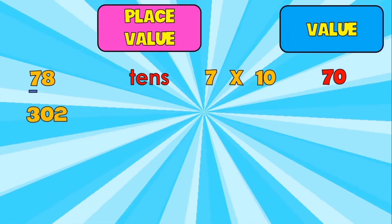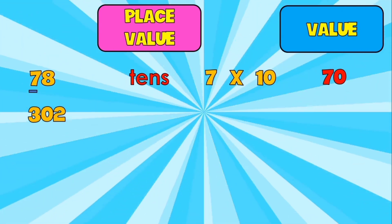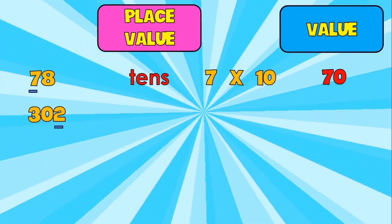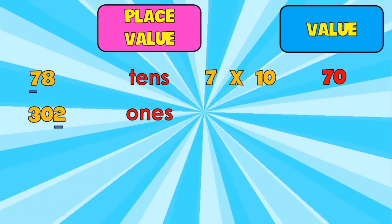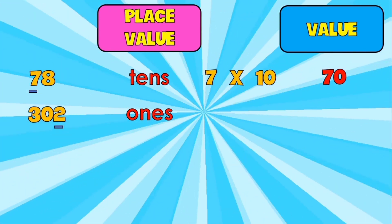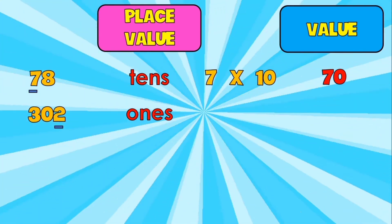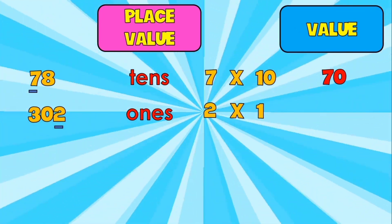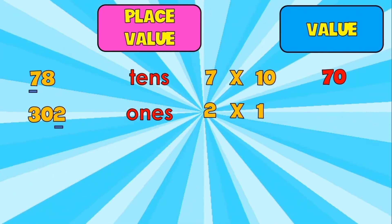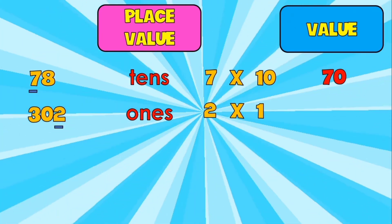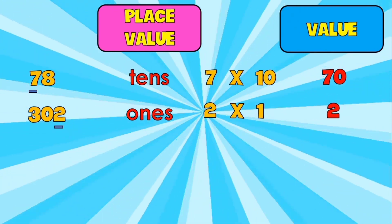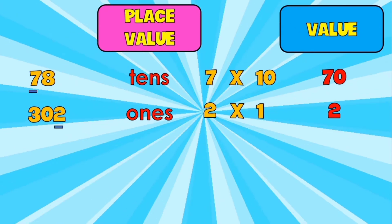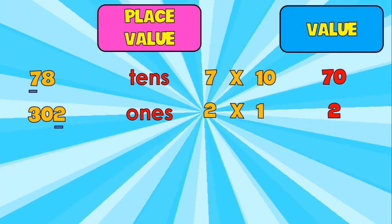Next number: 302. What is the place value of 2? It's in ones place. Let's get the digit 2 and multiply it by 1 since it's in ones place. 2 times 1 is 2. So, the place value of 2 is ones and the value of digit 2 is 2.